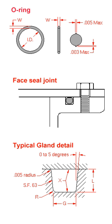Polyurethanes differ from classic elastomers in that they have much better mechanical properties. In particular, they have a high resistance to abrasion, wear, and extrusion, a high tensile strength, and excellent tear resistance. Polyurethanes are generally resistant to aging and ozone, mineral oils and greases, silicone oils and greases, non-flammable hydraulic fluids HFA and HFB, water up to 50°C, and aliphatic hydrocarbons.